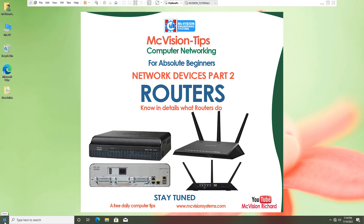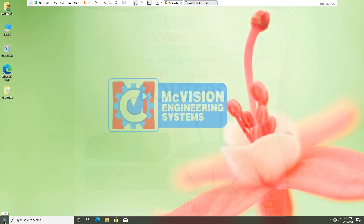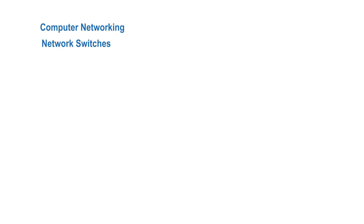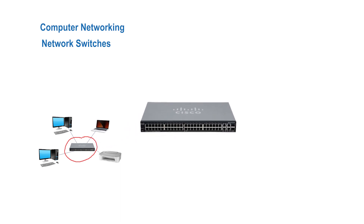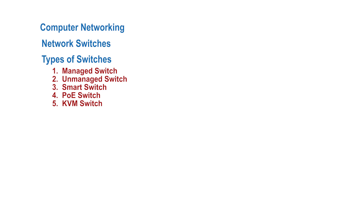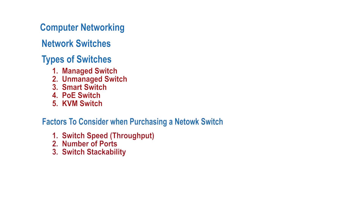To begin, let's quickly do a recap on the previous lesson. We spoke about the meaning of computer networking and network switches. We learned that computer networking means interconnecting computers or computing devices to share data and resources with each other, and the device that makes this possible in a local network is the network switch. We also learned the various types of switches available and some factors you should consider when purchasing a network switch. Please check the previous video — the link is in the description below.